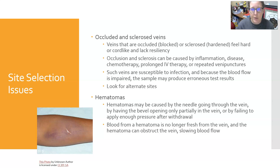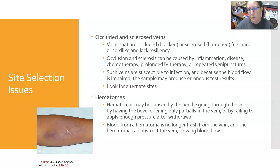There can be site selection issues. Occluded and sclerosed veins — which are blocked or hardened — will feel hard or cord-like and lack resiliency; they won't be bouncy and soft like healthy veins. This can be caused by inflammation, disease, chemotherapy, prolonged IV therapy, or repeated venipunctures. Such veins are susceptible to infections, and because blood flow is impaired, the sample may produce erroneous test results. If you can, look for alternate sites, though those can be difficult to come by as well.